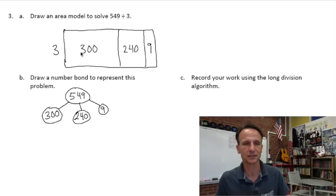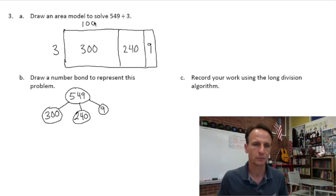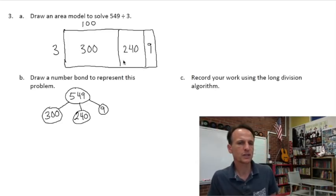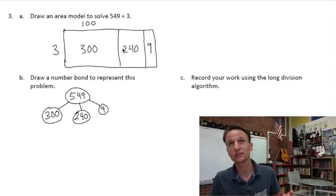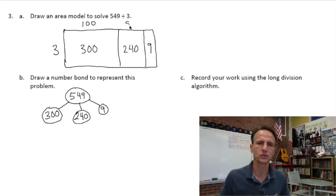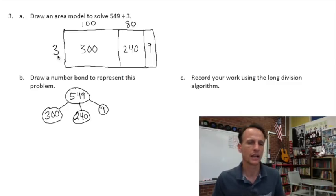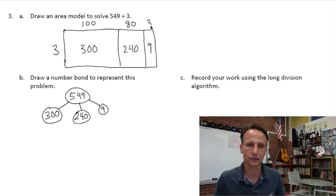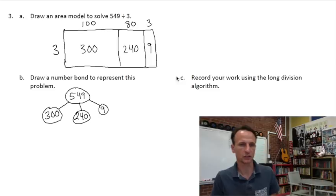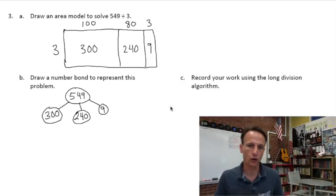How many threes in 300? Three times what is 300? That's 100. Three times what is 240? Three times eight is 24, so it's 80. Double-check: skip count by 80s — 80, 160, 240 — it works! Three times what is nine? Nine divided by three is three. So our final quotient is 183.